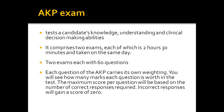The AKP exam comprises two papers taken on the same day, each two hours and 30 minutes long. Each paper has 60 questions, giving a total of 120 questions in a day. The two papers are separated by a gap of approximately one to one and a half hours. Each question carries its own weightage and the actual marks are displayed during the exam. There are no negative marks for incorrect answers.